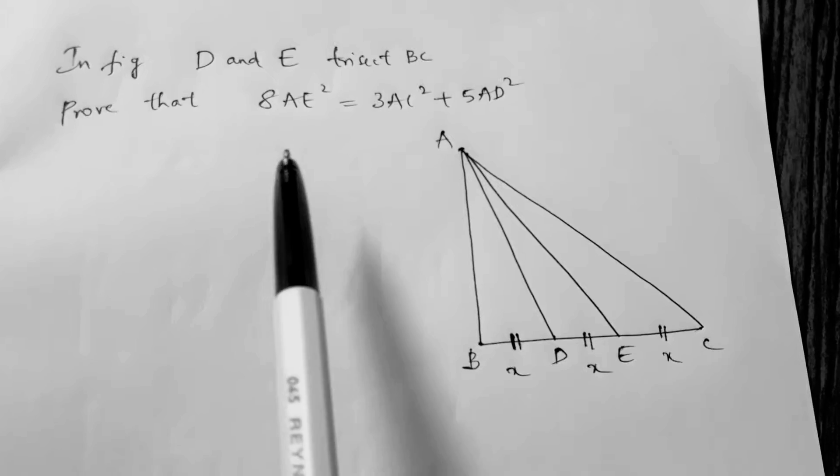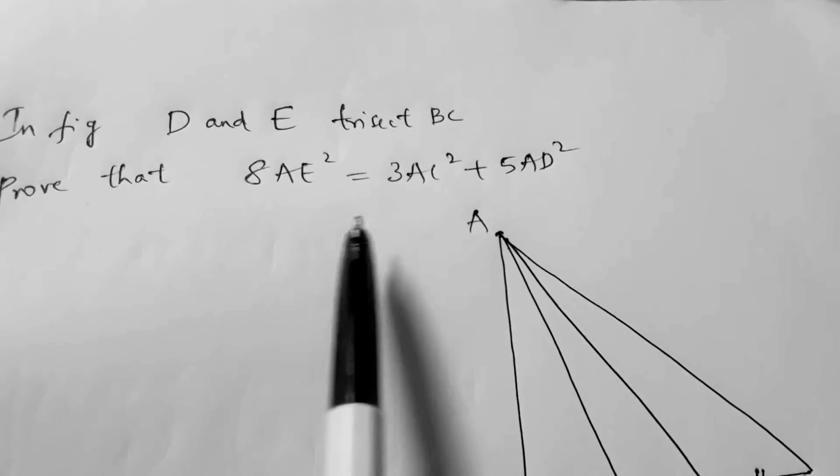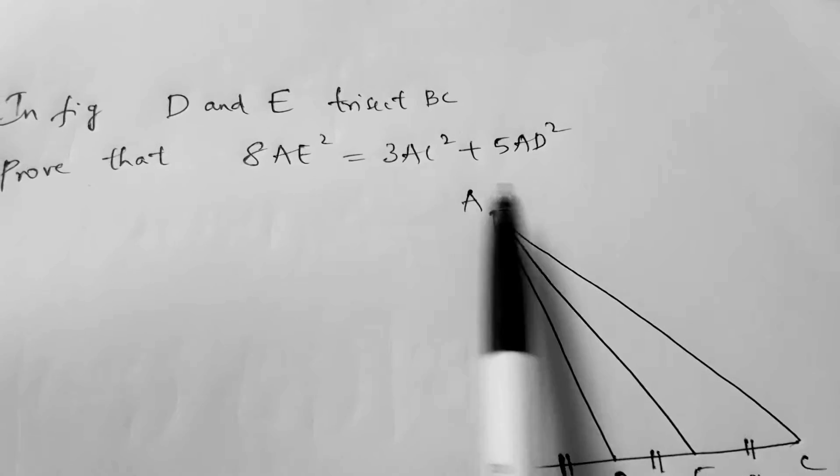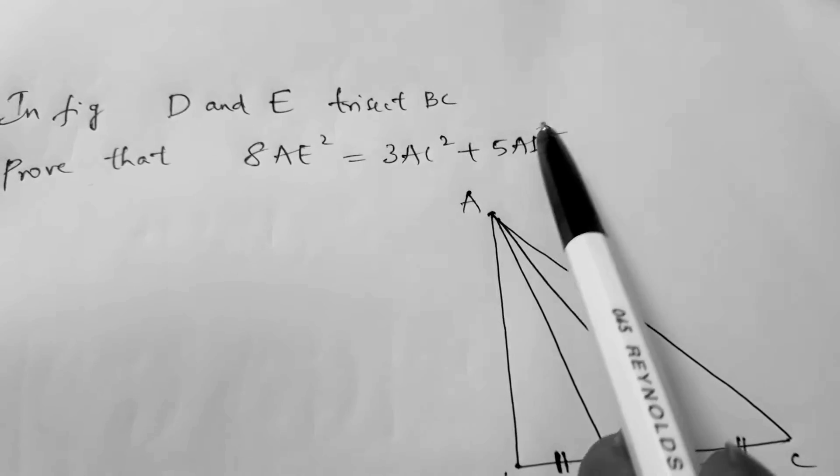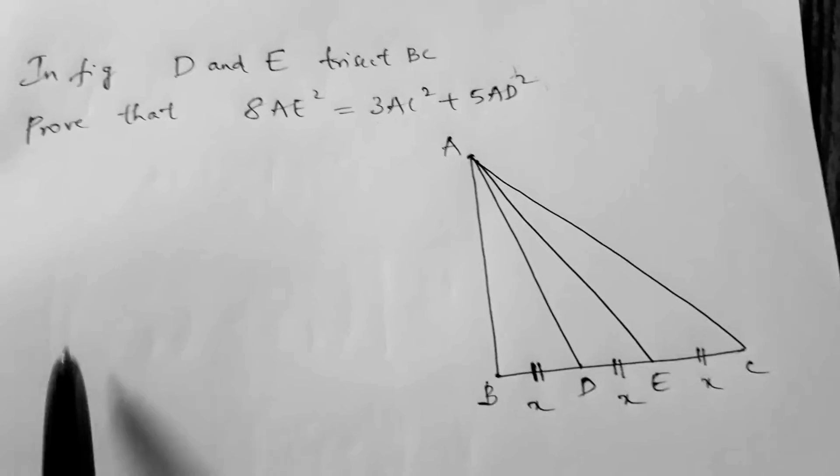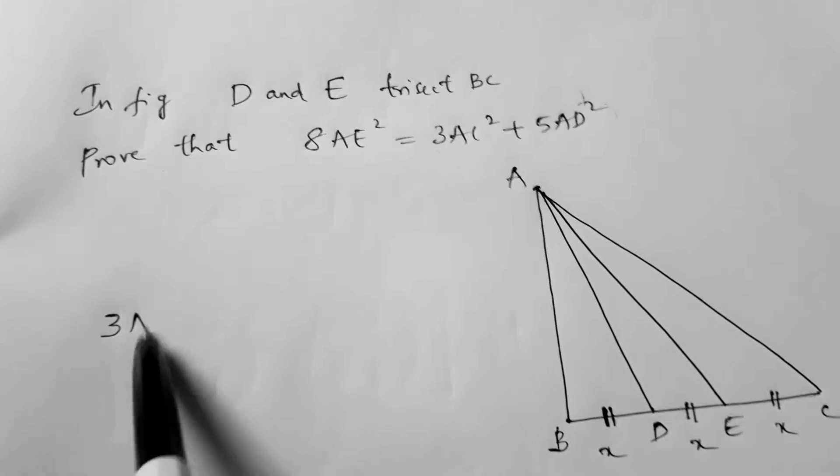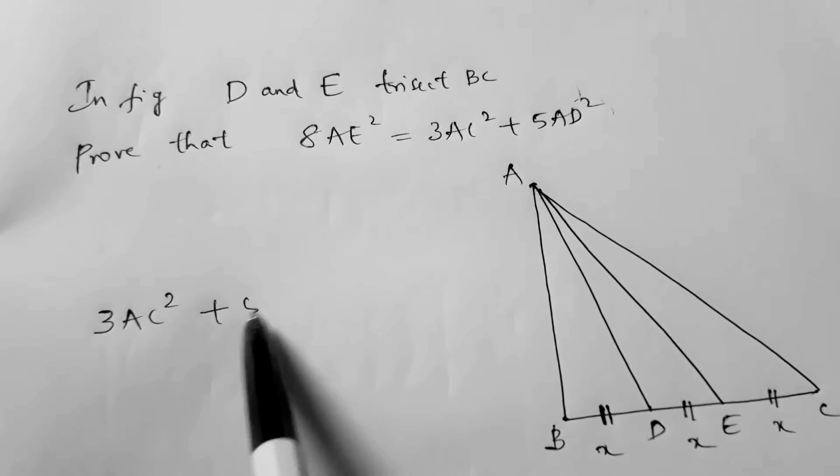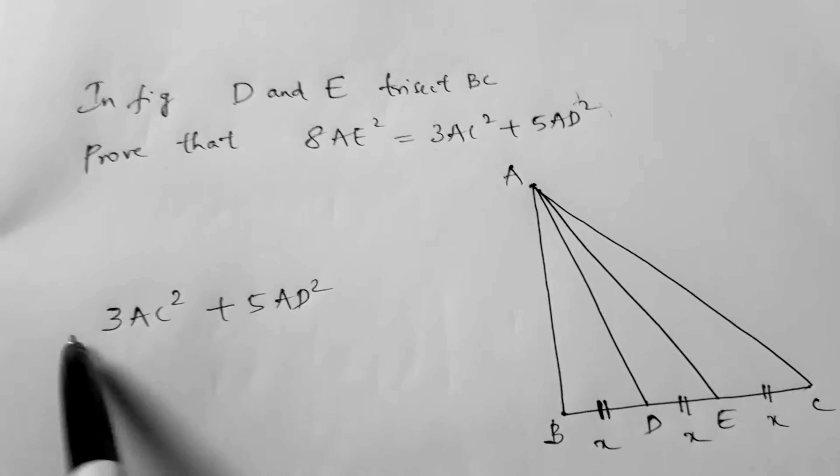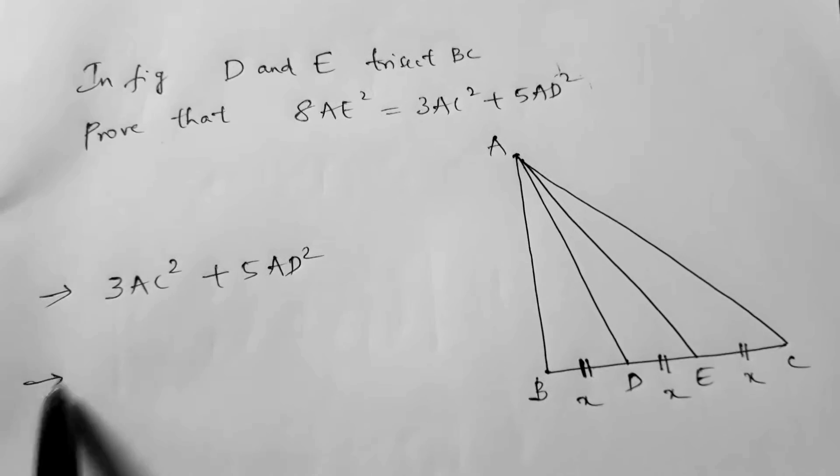Now we need to prove 8AE² equals 3AC² plus 5AD². Take RHS. Here, RHS is 3AC² plus 5AD².